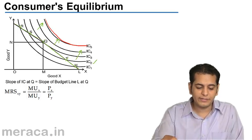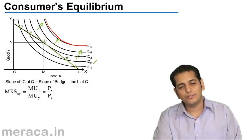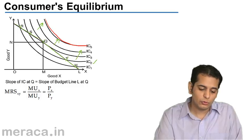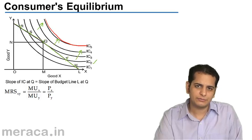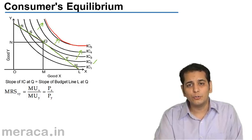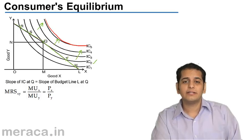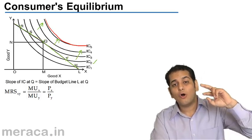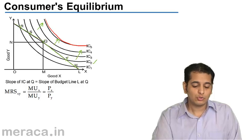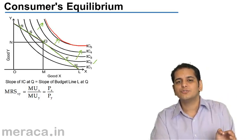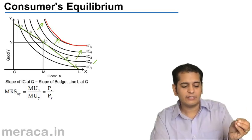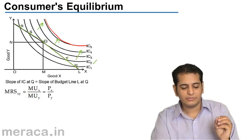There is point T which is similar to point S — it is also on the budget line and on IC2. So S and T will give the same level of satisfaction. But on further analysis, you can see that there is point Q which is on the budget line as well as on a higher indifference curve, IC3. So Q will give the consumer a higher satisfaction than R, H, S, and T.